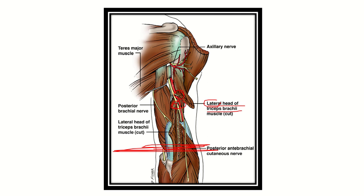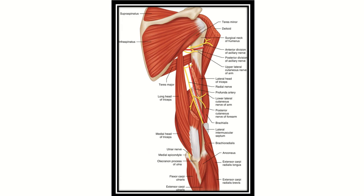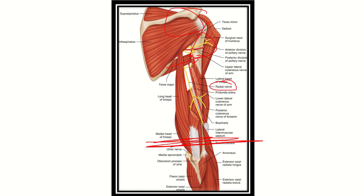We can see the radial nerve passing in the lower triangular area, just below the triceps major muscle. It supplies all the extensor group of muscles in the arm, forearm, hand, and wrist area. Elbow flexion will not be affected, as it is not a radial nerve function. All muscles supplied proximal to the distal aspect of the humerus will not be affected.